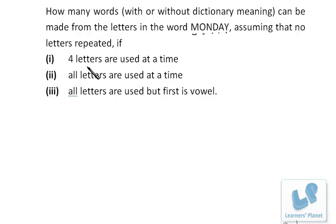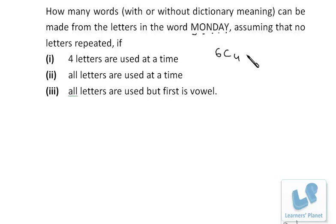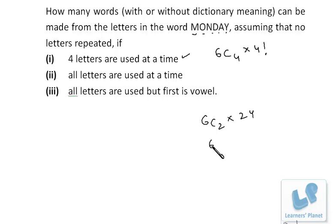For four-letter words from MONDAY's six letters: first we select 4 letters from 6, which is 6C4. Then these four selected letters can be arranged in 4! ways. So 6C4 × 4! = 6C2 × 24 = (6×5)/2 × 24 = 15 × 24 = 360 ways.